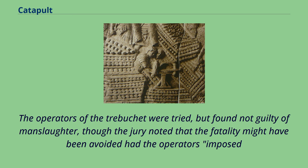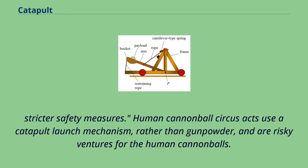The operators of the trebuchet were tried but found not guilty of manslaughter, though the jury noted that the fatality might have been avoided had the operators imposed stricter safety measures. Human cannonball circus acts use a catapult launch mechanism rather than gunpowder, and are risky ventures for the human cannonballs.